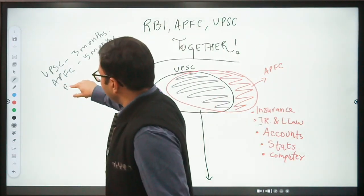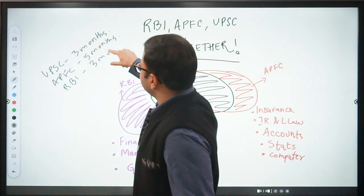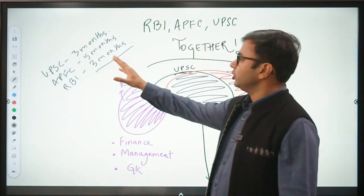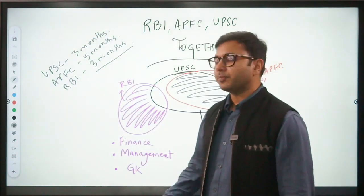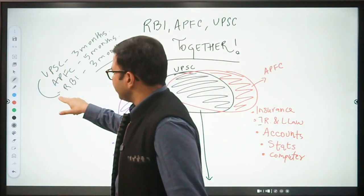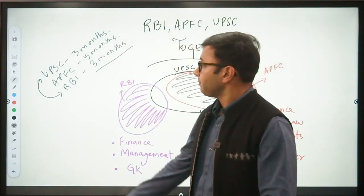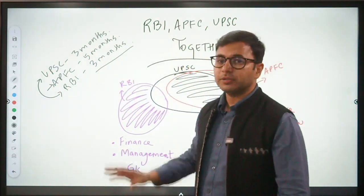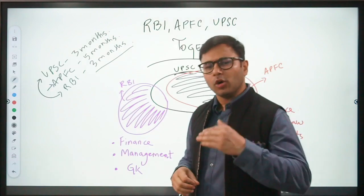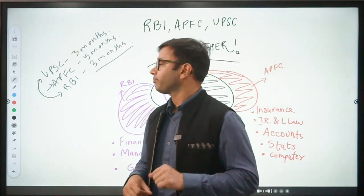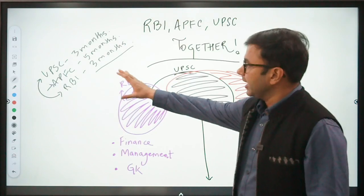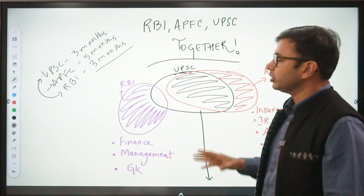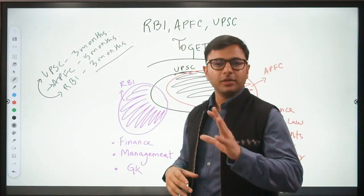If we talk about RBI, there are a minimum of three months left for the exam. Even if there is a notification, you will have two and a half to three months to prepare. Maximum, these two exams can overlap. APFC should not be a cause for worry because it will be a minimum of five months, or six to eight months later. Considering the probable dates of these exams, let's now come to the syllabus part and see what are overlapping and non-overlapping areas.